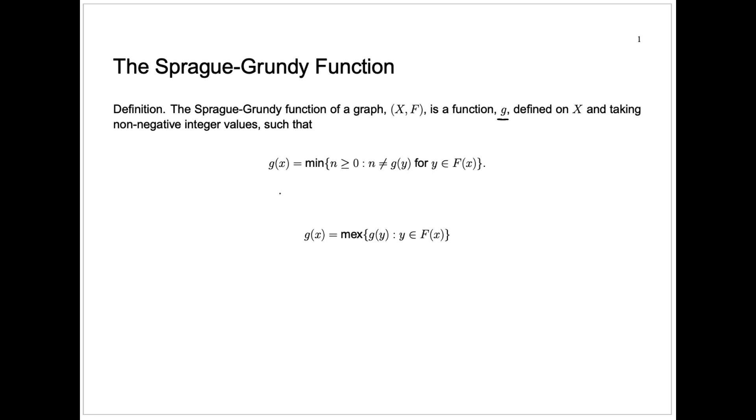Another way of saying that is that g of x is the minimum excluded value among all the numbers g of y, where y is a follower of the node x.